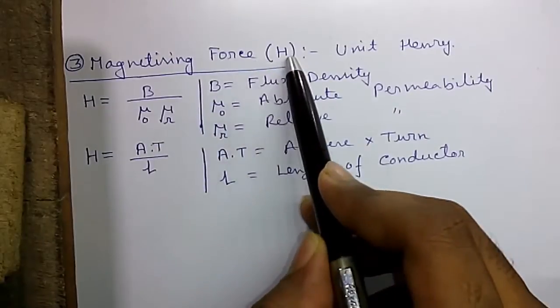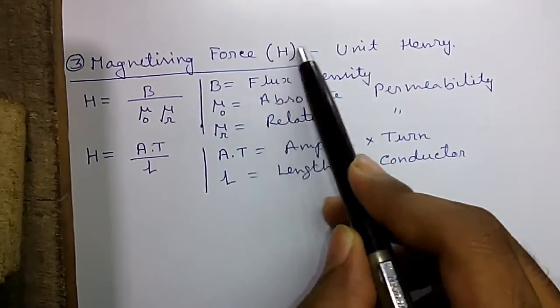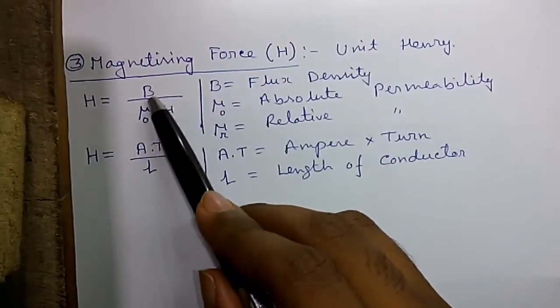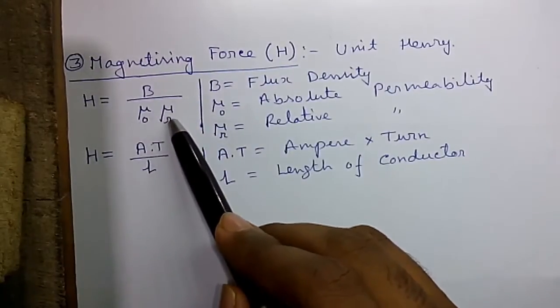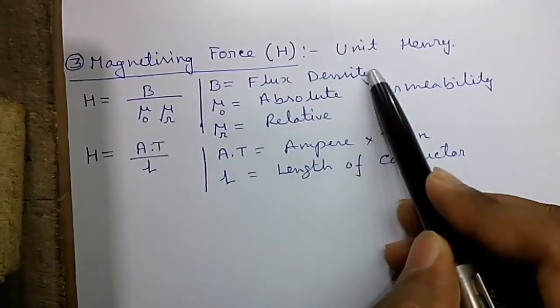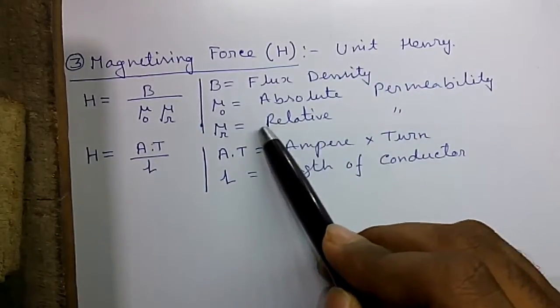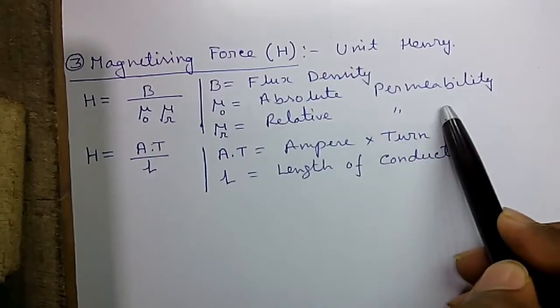Formula three, the magnetizing force, represented by H and unit is Henry. So H equals to B divided by mu zero into mu R, where B is the flux density, mu zero is the absolute permeability and mu R equals to relative permeability.